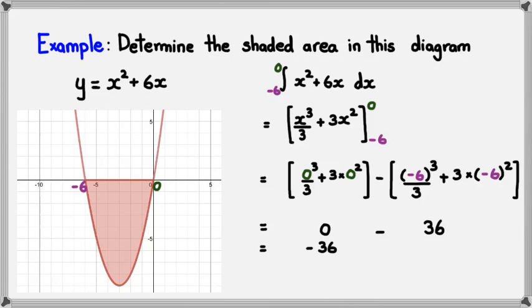Because, it's actually not possible for us to have an area as a negative number. So, what we do is, at this point, we actually have to take the absolute value of the area.